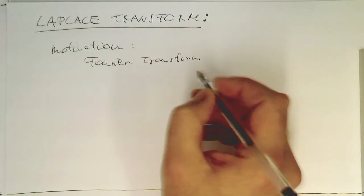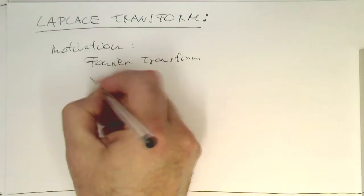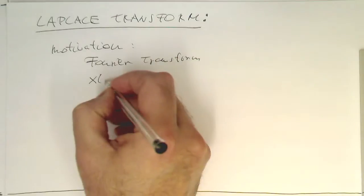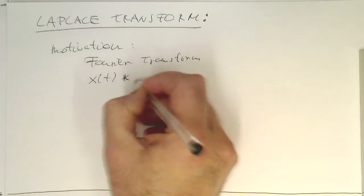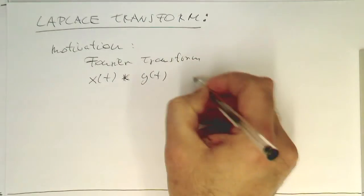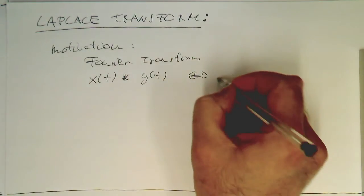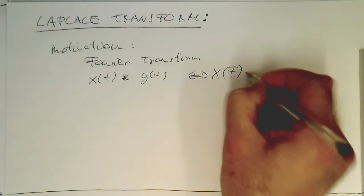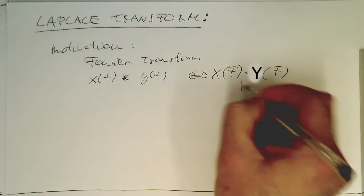The Fourier transform had a very convenient feature: if we have a convolution operation, something like x of t convolved with y of t, then in the frequency spectrum, if we have x of f, this turns into a multiplication operation.